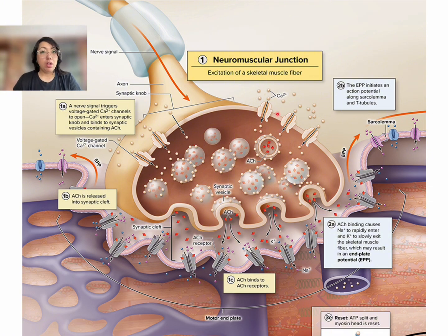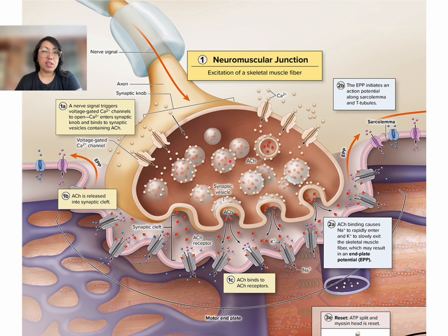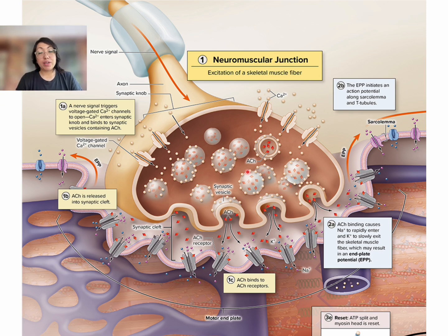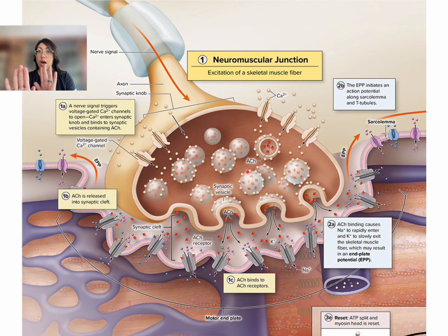Our first key player here is calcium. Calcium is going to come into the synapse — the synaptic bulb is another term you may see. Once calcium comes in, it is going to communicate to these little vesicles, these little pouches, that they need to do some moving. What is inside those pouches? This molecule called acetylcholine. Acetylcholine is a really important neurotransmitter — it's basically a communicator of the nervous system. Generally, acetylcholine is an excitatory neurotransmitter, meaning it makes the body do something. That's why we call it an excitatory neurotransmitter.